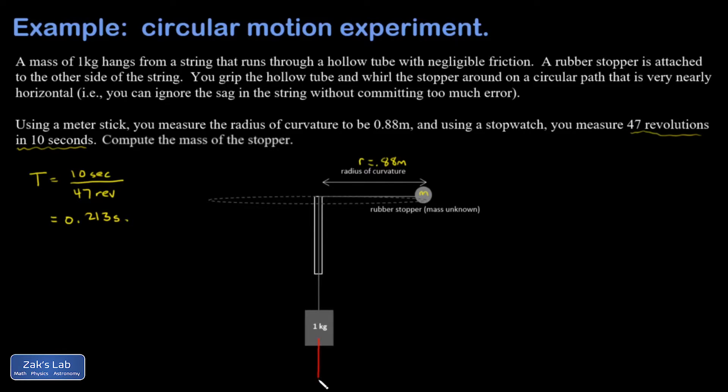I have gravity pulling down on the 1 kilogram mass. mg is 1 kilogram times 9.8 meters per second squared, which gives me 9.8 newtons. There's a force pulling up, which is why this thing isn't falling, and that's the tension. This is a case where the tension is known because I have a completely static mass at the bottom. That must balance the force of gravity exactly, so that's 9.8 newtons.